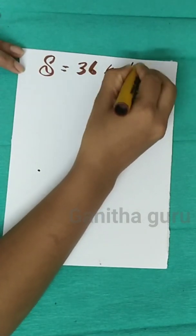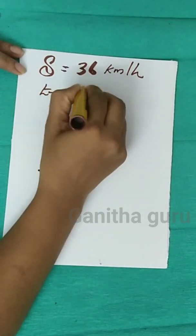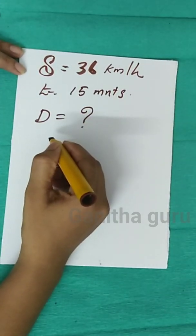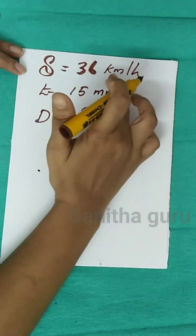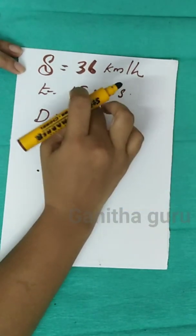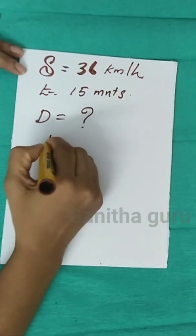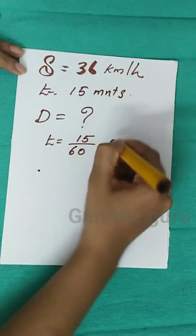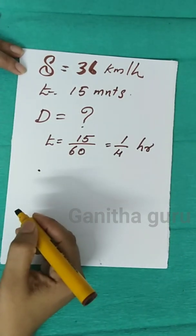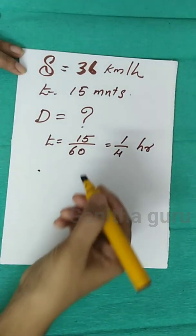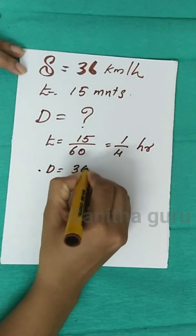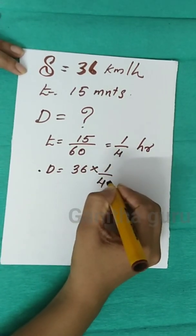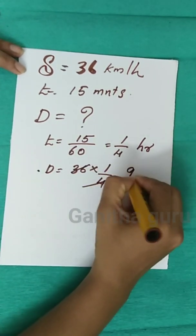The speed is 36 km per hour and the time is 15 minutes. Distance equals speed into time. 15 minutes is 1 by 4 of an hour. So distance for the first part is 36 into 1 by 4, which is 9 km.